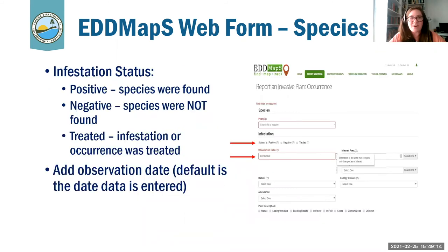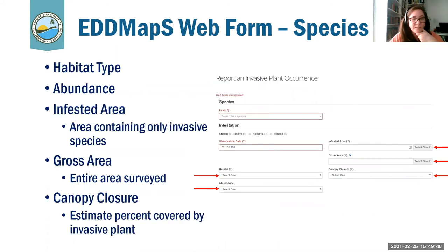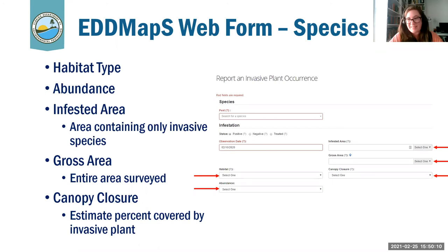You'll provide some information on the infestation — did you find the plant there? Did you not find it? As land managers, if somebody says there's Brazilian pepper at a site, we can go out and ground truth that. You'll add the observation date — the default is the date you entered it, so if you have a collection of field days, make sure you adjust it for the date it was actually observed. You'll add the habitat type and give an estimate about how much space the infested area is, trying to only include the area containing the invasive species. There are other fields like gross area or canopy depending on what plant you're talking about, and there are resources online that can help walk you through that.